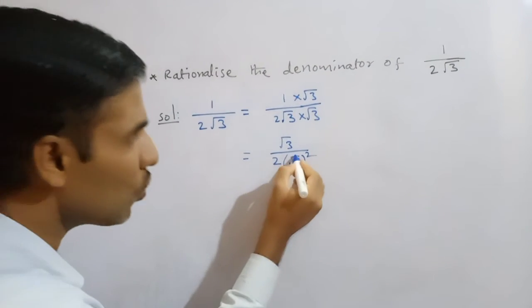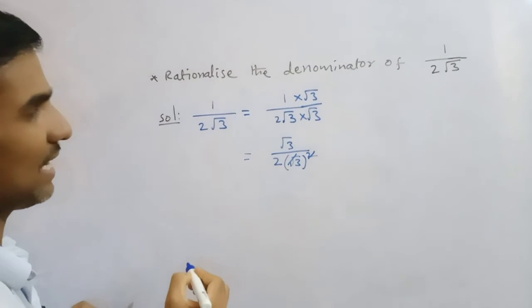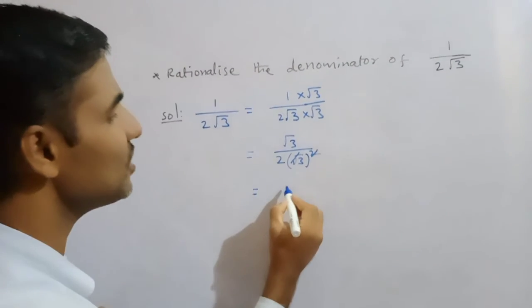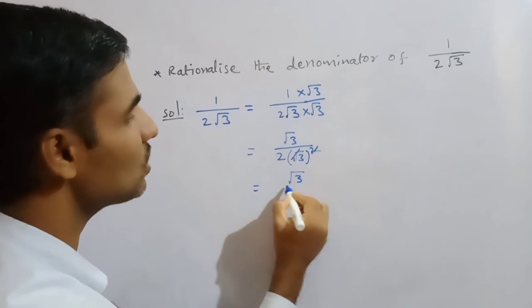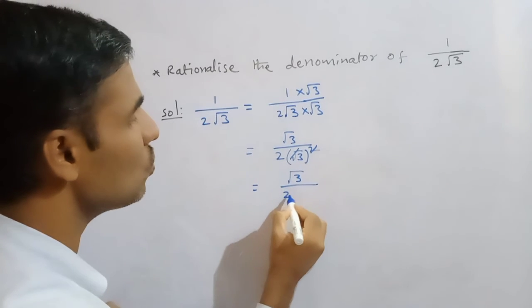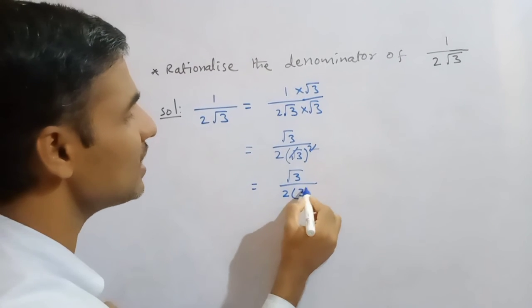Now root square will cancel. Okay, remaining, you write it. Which one is there here? Root 3 divided by here 2 into, here how much is there? 3 there, 3, right.